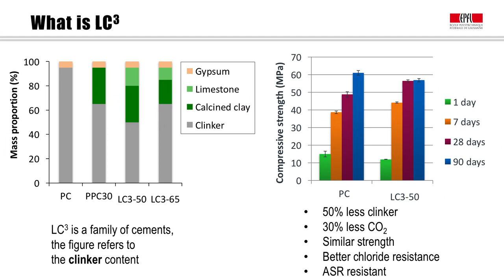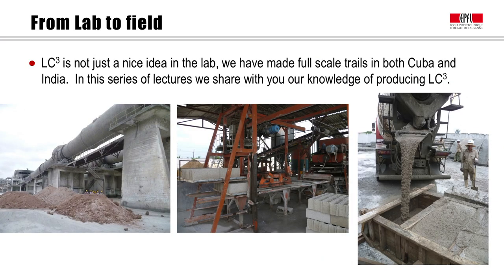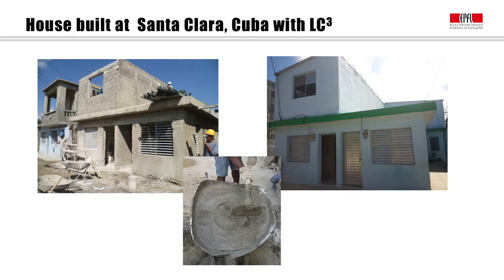We have similar strength from about seven days, much better chloride resistance — which is extremely interesting in marine environments — and we can almost eliminate alkali-silica reaction, along with a number of other advantages. This isn't just an idea that a few academics have put together. We've really taken this technology to full scale, with full-scale trials in both Cuba and India. The pictures here show production done in Cuba in 2013, in a rotary kiln used for making Portland cement, production of blocks in a factory, production of reinforced concrete, and here a house constructed with these products in Santa Clara, Cuba.